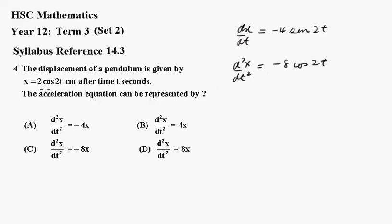Now we know that x equals 2 cos 2t, so I'm going to rewrite that as minus 4 times 2 cos 2t. So now I can simply replace the x and we get minus 4x. Of course that is a.